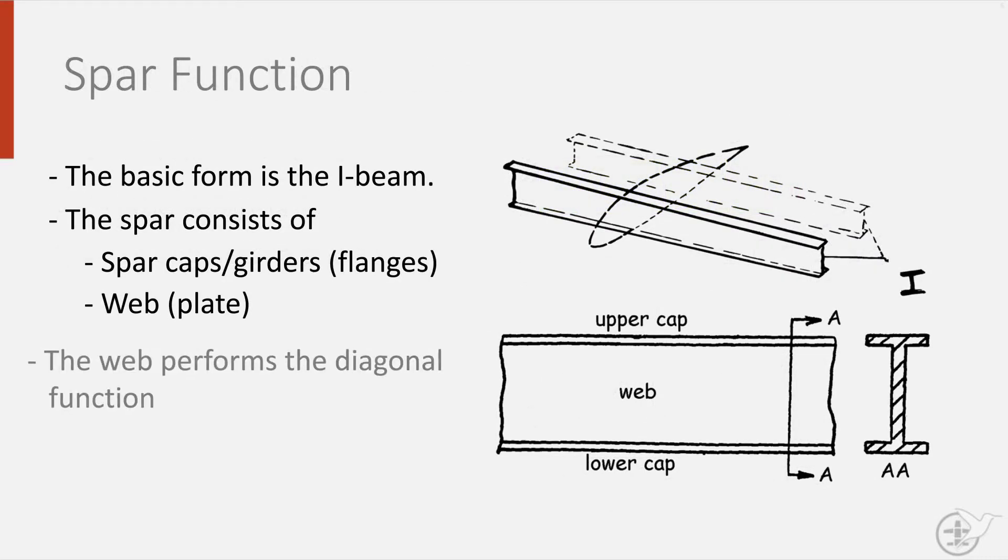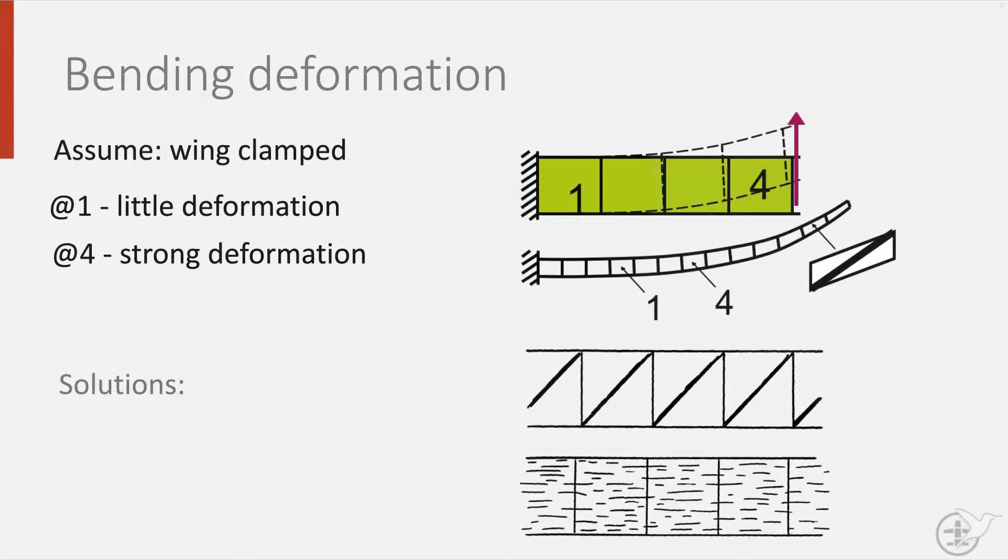Each part of the spar wants to become diamond shaped. If we consider the spar as a frame, we can see here that it must contain diagonal elements to counteract the deformation, as shear is acting on it. This is why the spar is often made out of a sheet material.